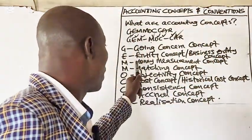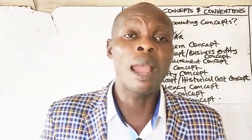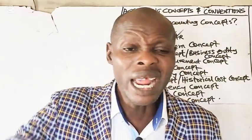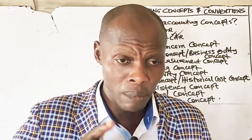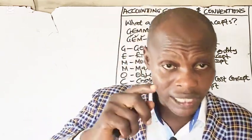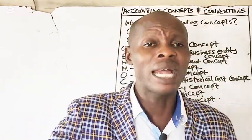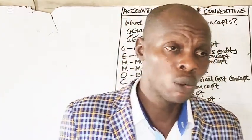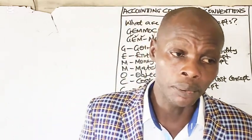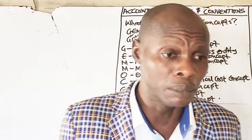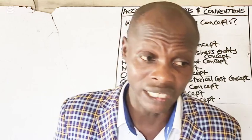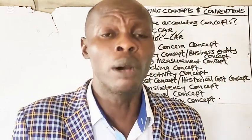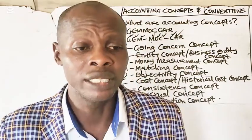Number three: money management concept, also called the monetary concept. This concept assumes that only items that can be measured in money are recorded. Anything that cannot be quantified in money will not be recorded. For example, staff loyalty cannot be quantified, so it will not be recorded. But assets, liabilities, and equity can be quantified and therefore recorded.